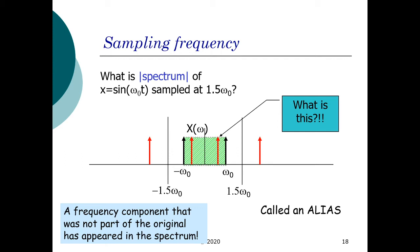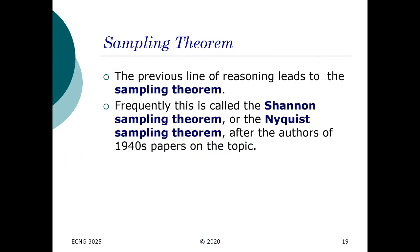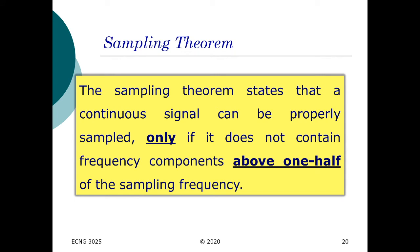This brings us to the sampling theorem, also referred to as the Shannon sampling theorem or the Nyquist sampling theorem. It states that for any continuous-time signal to be properly sampled, the sampling frequency must always be at least twice that of the original frequency. Once the sampling frequency is more than twice the original signal frequency, the aliasing effect will not be observed. If it is less than that, you will tend to observe the aliasing effect.